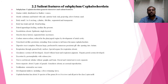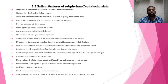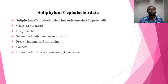Cephalochordata has about 30 different species of the genus Branchiostoma, all placed in the single class Leptocardia. So these 30 species are confined to Cephalochordata and placed into a single class. Cephalochordata thus has only one class: Leptocardia. These are the general characters of Cephalochordata. Let us now see the classification.